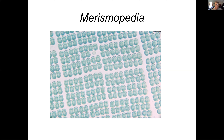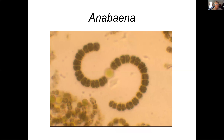You can see there's no clear chloroplast or nucleus in there. It also has this blue-green color because of the pigments, and that's something that will help you set it aside. This one's called Anabaena, and it has a heterocyst — a nitrogen-fixing cell — in the center of this S-shaped series of connected cells.